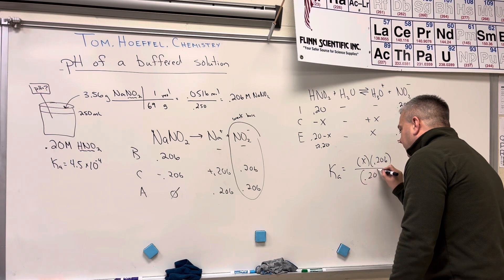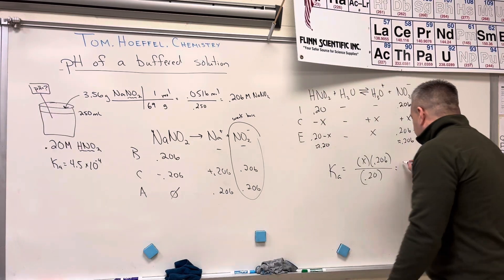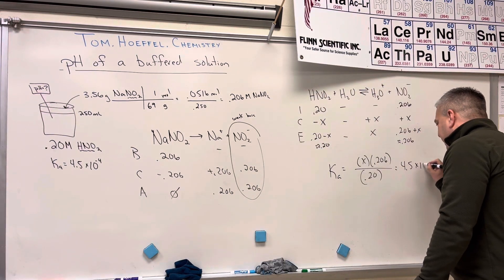is going to be equal to the Ka value of 4.5 times 10 to the negative 4.